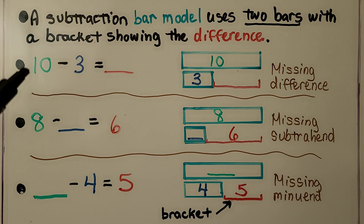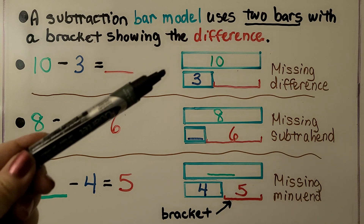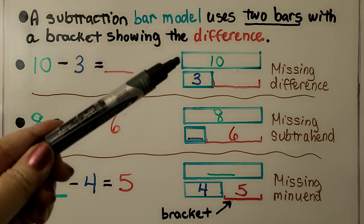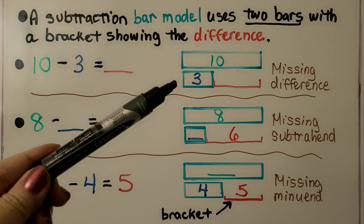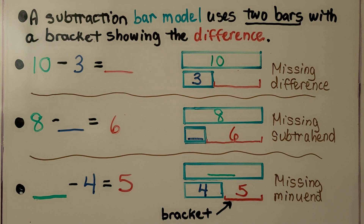Here we have 10 minus 3 is equal to some number — we don't know what the difference is. We have two bars with the minuend 10 here and the subtrahend 3 here, and we need to find the missing difference. Do you know what 10 minus 3 equals? If you said 7, you're right.